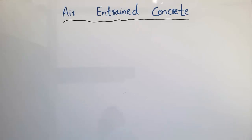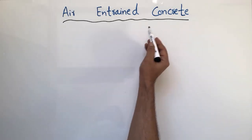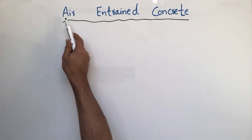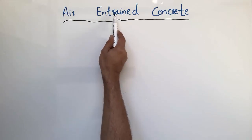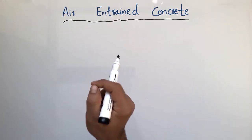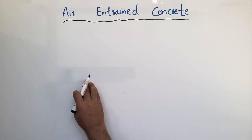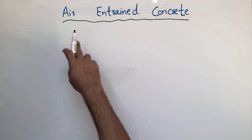Hello guys, welcome back to the Seven Engineering YouTube channel. Please subscribe our channel for daily Seven Engineering videos. Today our lecture is about air entrained concrete. This is a special type of concrete used to resist the freezing and thawing action. As the name suggests, air is intentionally entrained — meaning air bubbles are intentionally introduced into the concrete to increase the durability of the hardened concrete.